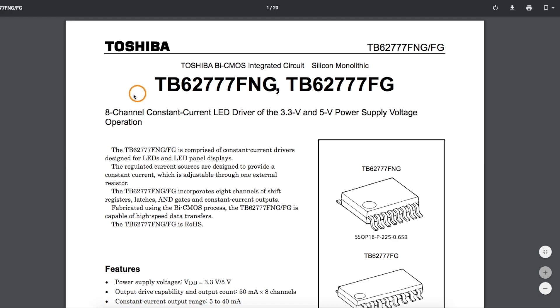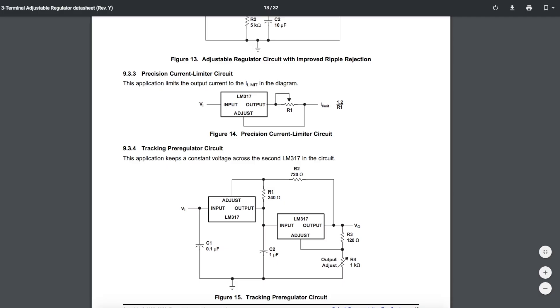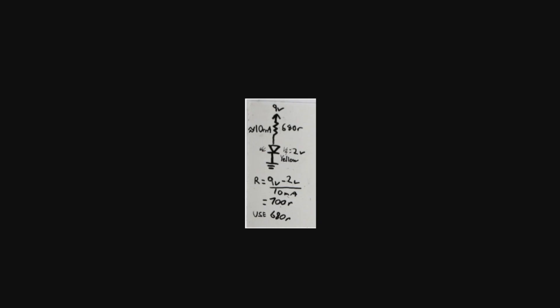Of course, you could get a special constant current LED driver chip, or use another type of circuit, maybe something with op amps, or even an LM317 regulator as a current source. But for now, we'll assume we don't need anything too precise, and we're going to stick with transistor circuits.